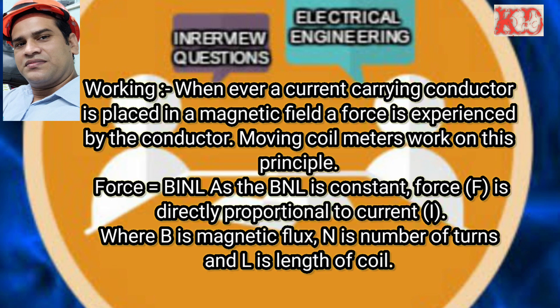Working principle: Whenever a current-carrying conductor is placed in a magnetic field, a force is experienced by the conductor. Moving coil meters work on this principle. The force equals B × I × N × L. Since B, N, and L are constant, force F is directly proportional to current I — that is, F ∝ I — where B is the magnetic flux density, N is the number of turns, and L is the length of the coil.